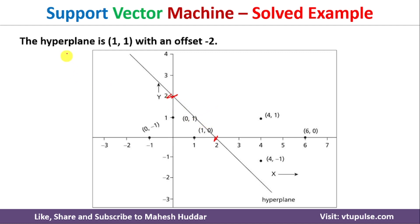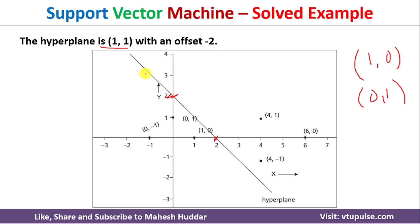If the coefficient were (1,0), the hyperplane would be parallel to the x-axis — a horizontal line. If it were (0,1), we would get a vertical line. But since we have (1,1), we get a 45-degree inclination with respect to the origin, with an offset of -2. This is how we draw an optimal hyperplane for the given dataset to classify it into two classes.